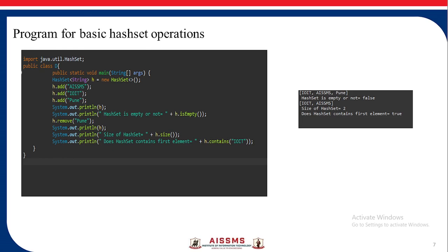Now a program for basic HashSet operations. A HashSet h is created as a new HashSet, and values are added to it. First we print the HashSet, then check whether it is empty or not — it returns false because the HashSet is not empty. We then use the remove method to remove 'Pune', display the HashSet again, check the size using h.size(), and check whether the HashSet contains the string 'IOIT' using h.contains() — which returns true.